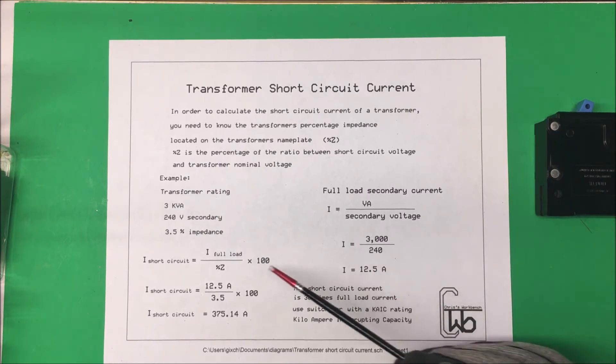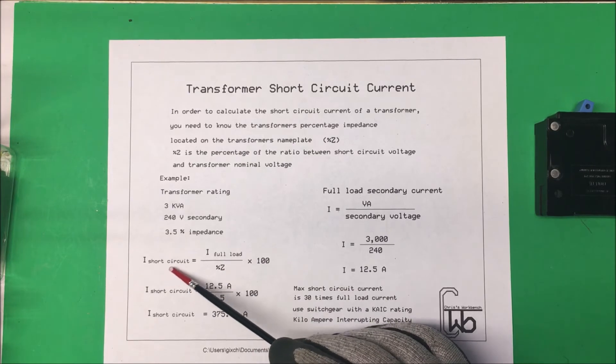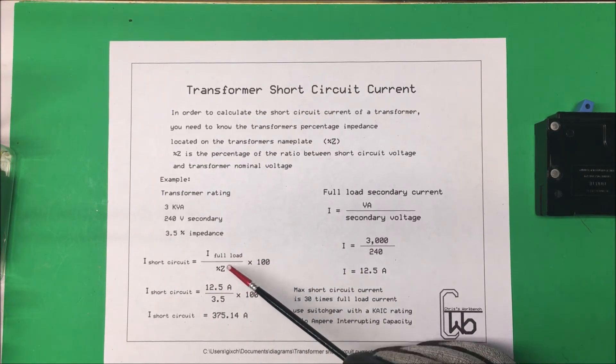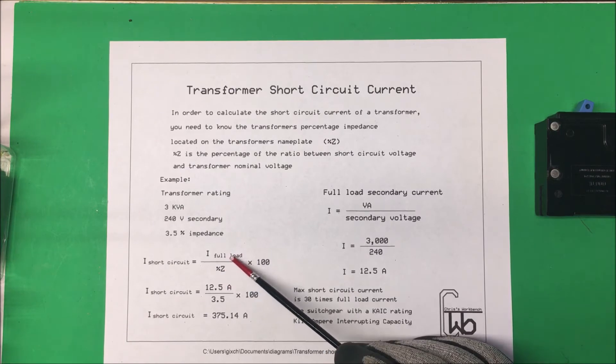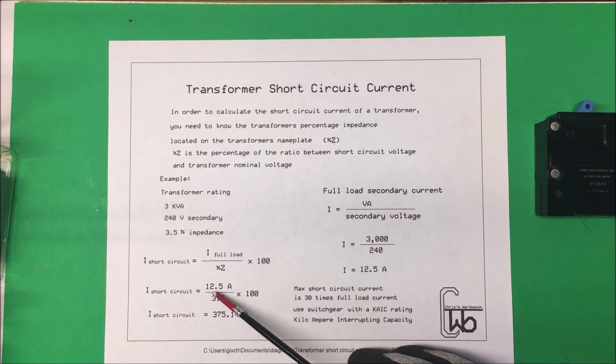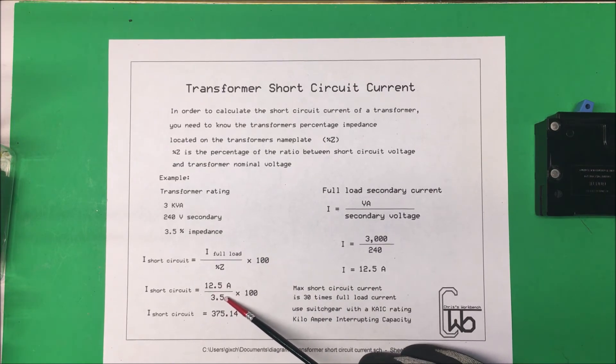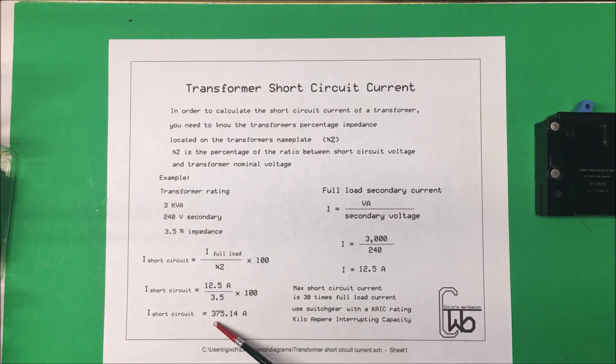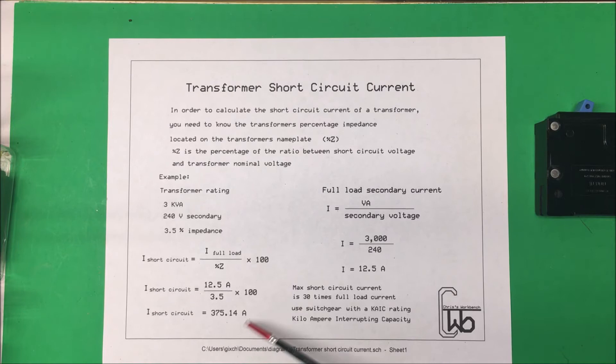Now if we short that out to find our short circuit current, we take our full load current, which is our 12.5 amps, and we divide that by percentage impedance and we times that by 100. So we got our 3.5 into our 12.5 times 100, so that comes out to 375 amps if we short it out.